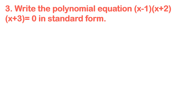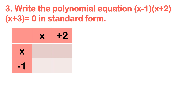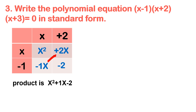Example number 3: write the polynomial equation (x-1)(x+2)(x+3) = 0 in standard form. First, multiply (x-1) and (x+2) using the table. x times x is x squared, x times positive 2 is 2x, x times negative 1 is negative x, and negative 1 times 2 is negative 2. Solving the diagonal: negative x and positive 2x have different signs, so subtract and copy the sign of the bigger number. The product is x squared plus x minus 2.